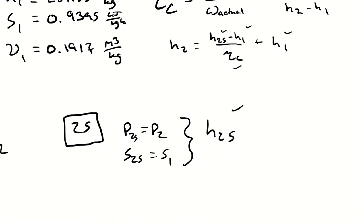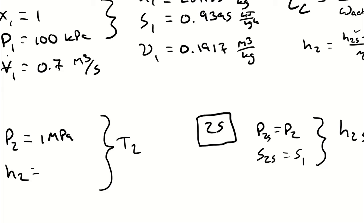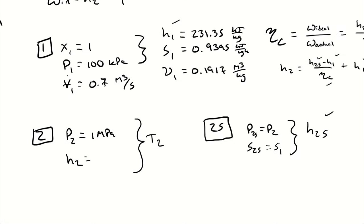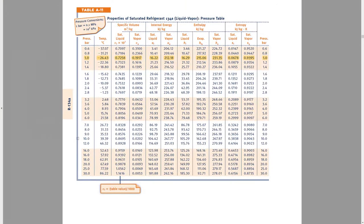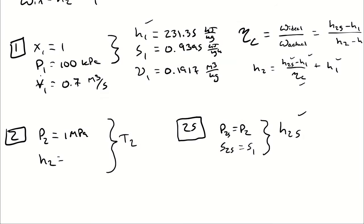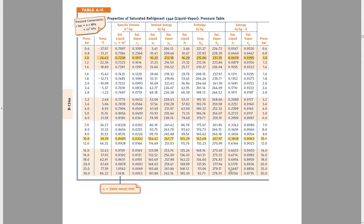And then, at state 2, I know that I have a pressure of 1 megapascal and an entropy of 0.9395. So, with that entropy and that pressure, first question is, what is the phase? I'm going to determine that by looking up SF and SG at 1 megapascal. 1 megapascal is 1,000 kilopascals, which is going to be 10 bar. 10 bar has an SF of 0.3838 and an SG of 0.9043. Therefore if my entropy is greater than 0.9043, I have a superheated vapor. If it's less than 0.3838, I'm going to have a compressed liquid. My entropy is 0.9395, which means that I have a superheated vapor.